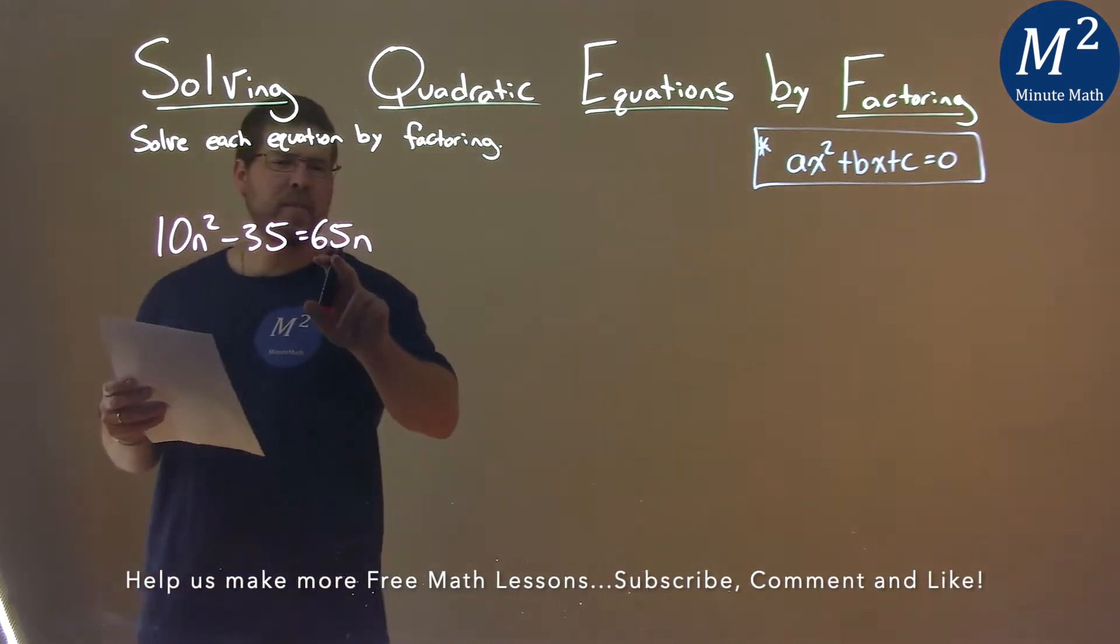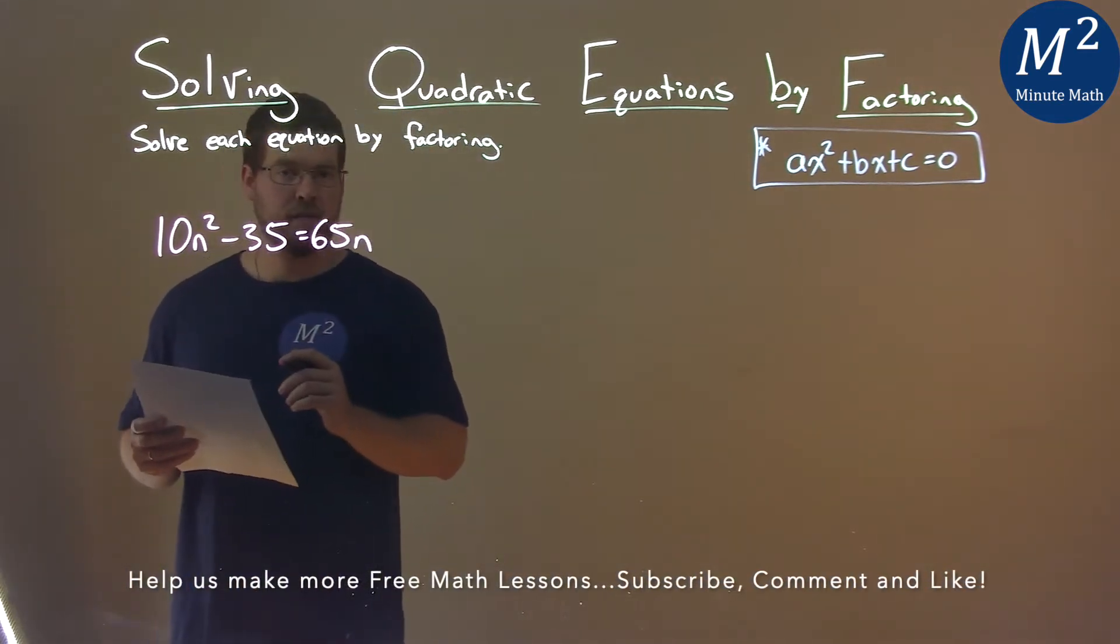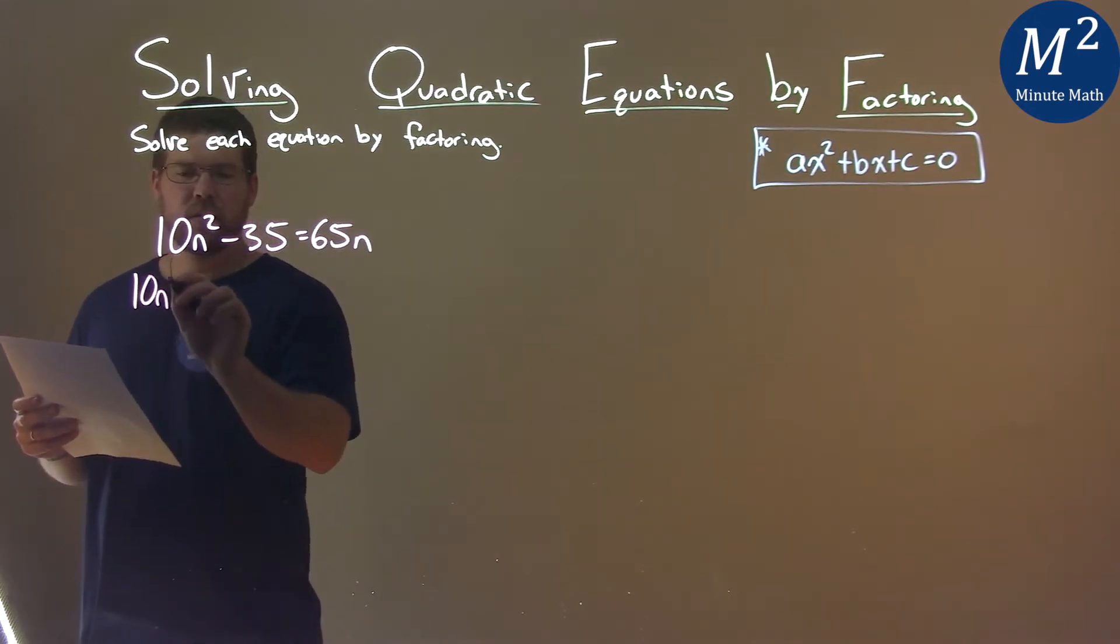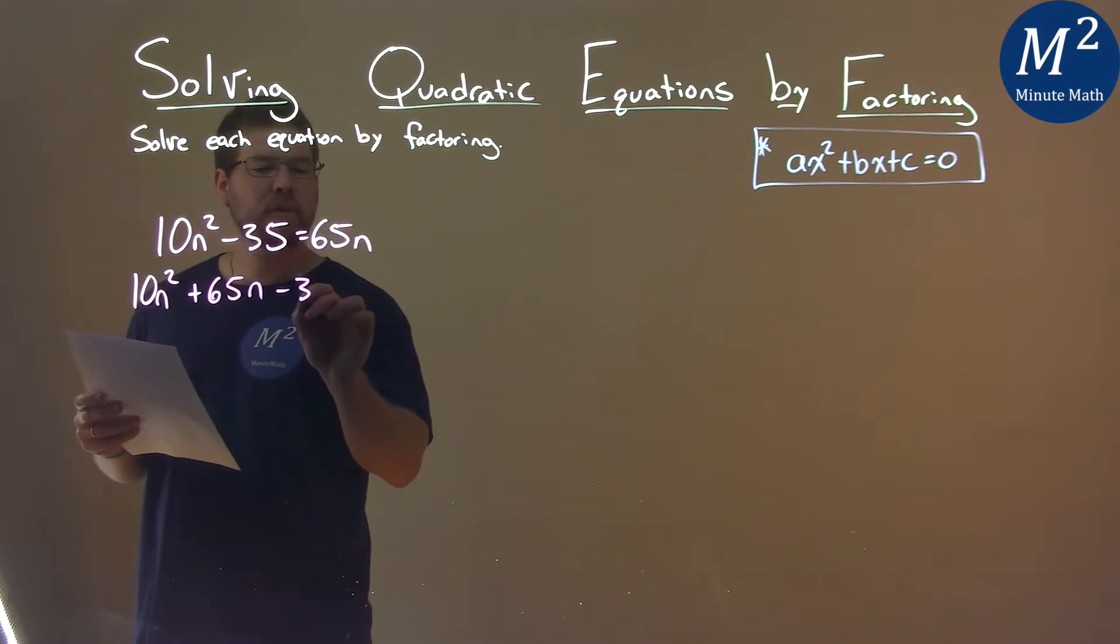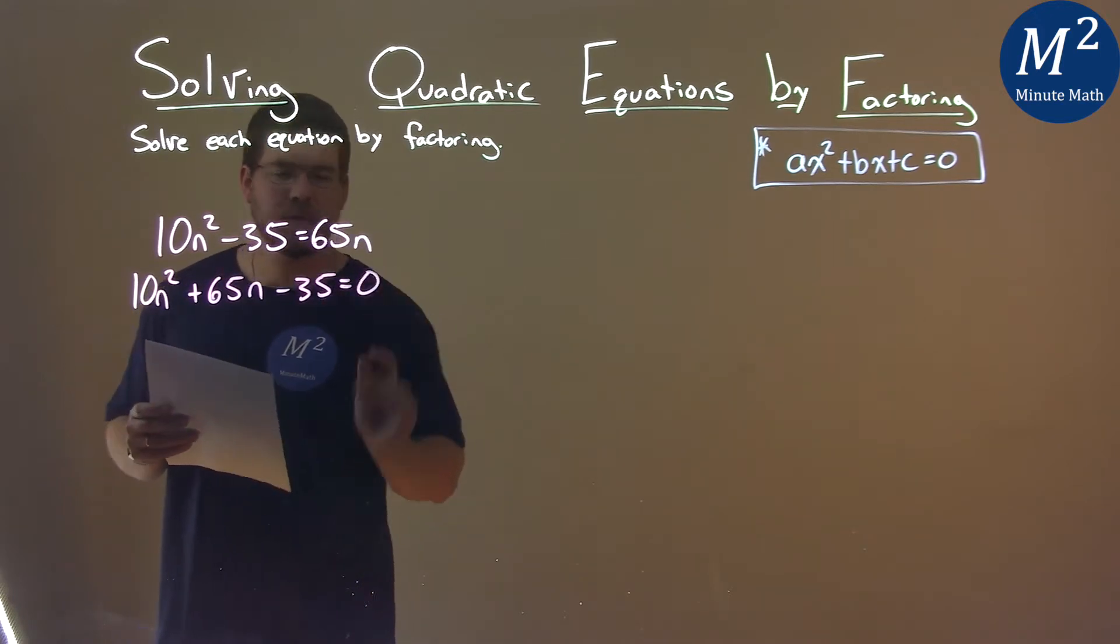First thing is, I'm going to bring the 65n over to the left-hand side by subtracting it. So we have 10n squared plus 65n minus 35 equals 0.